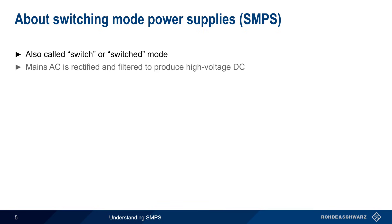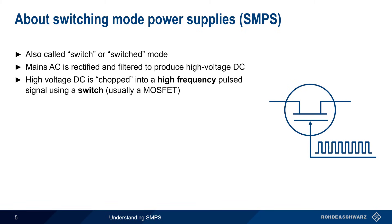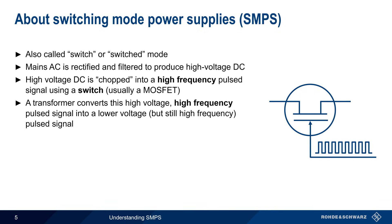In a switching mode power supply, mains AC is rectified to produce very high voltage DC. This high voltage DC is then chopped into a very high frequency pulse signal by means of some type of switching semiconductor, typically a MOSFET. A transformer is then used to convert this high voltage, high frequency pulse signal into a lower voltage, but still high frequency, pulsed signal.